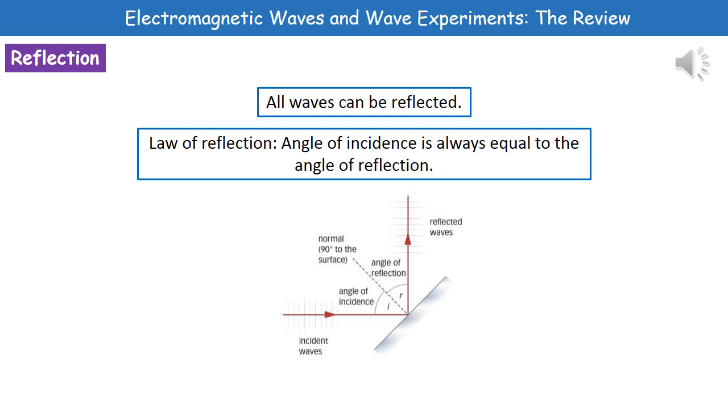So you might be asked to draw a wave diagram. What we've got there is the little diagram that you would have to draw. First thing to notice is you need to include your normal line, which is at 90 degrees to the surface. Then we measure the angle of incidence going from the normal to our incident waves, and then we measure that exact same angle and plot the angle of reflection coming out. The only other thing to do is add the arrowheads on to show the direction.